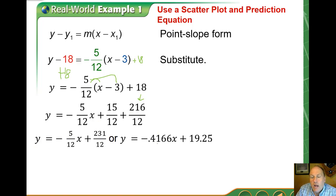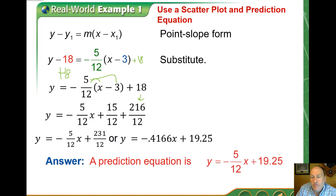Alternatively, y equals negative 0.4166 x plus 19.25. Now the text actually combines both a fraction and a decimal. All three of these are perfectly acceptable prediction equations. They are models for our situation. We'll go ahead and use the one the text is using though, negative 5/12 x plus 19.25.